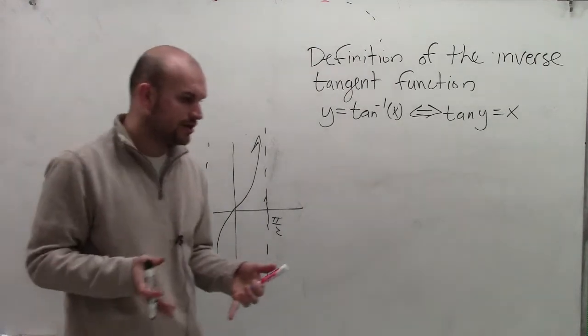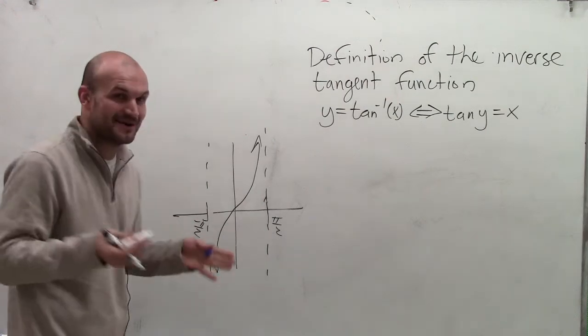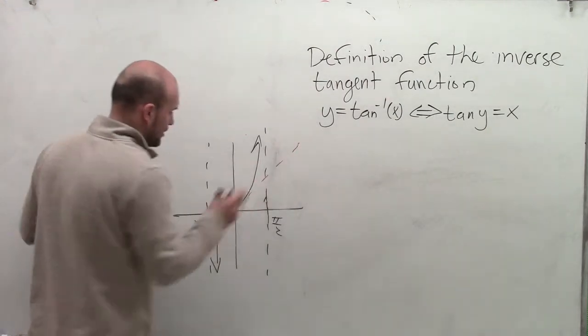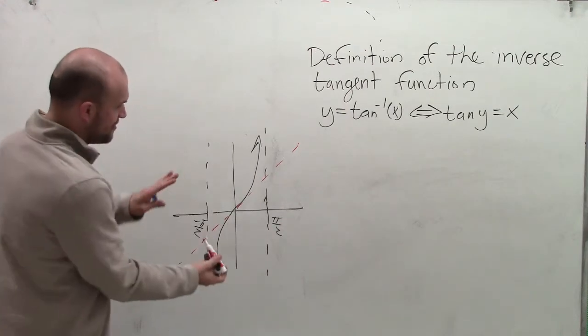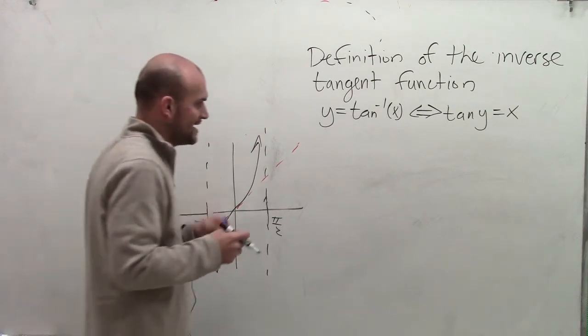when we're talking about graphing the inverse tangent, we know that we need to reflect it about what we call the xy line. So therefore, my graph is now going to be swapped over this xy line.